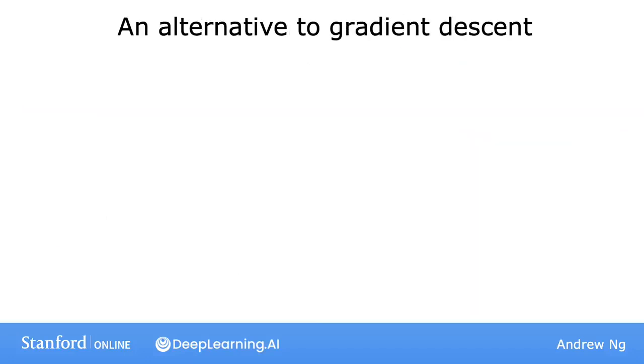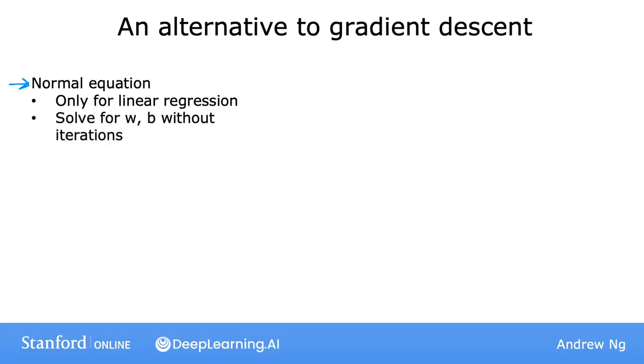Before moving on from this video, I want to make a quick aside or a quick side note on an alternative way for finding w and b for linear regression. And this method is called the normal equation. Whereas it turns out gradient descent is a great method for minimizing the cost function j to find w and b. There is one other algorithm that works only for linear regression. And pretty much none of the other algorithms you see in this specialization for solving for w and b. And this other method does not need an iterative gradient descent algorithm.